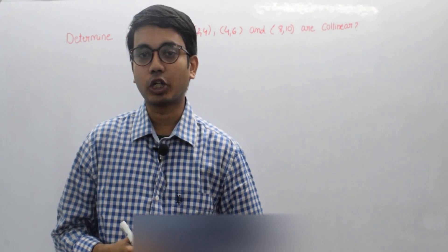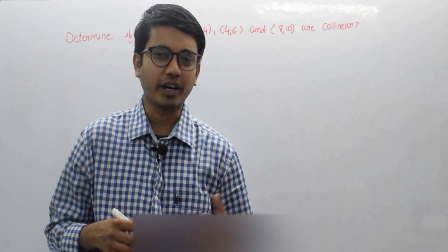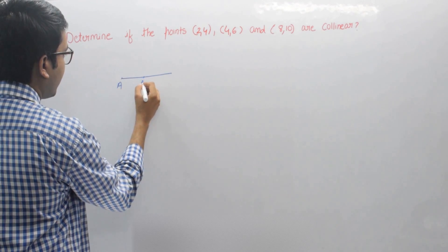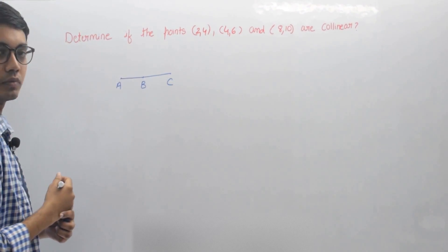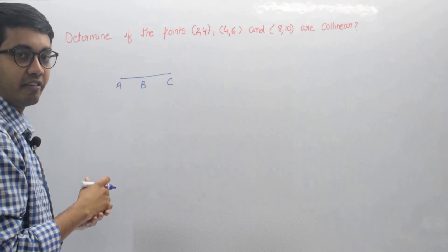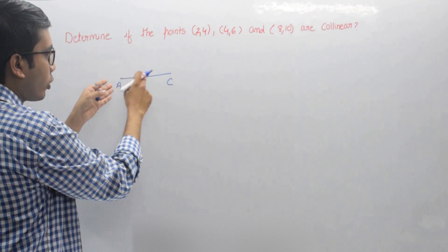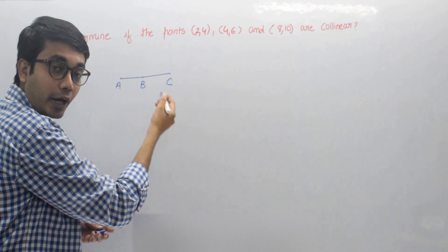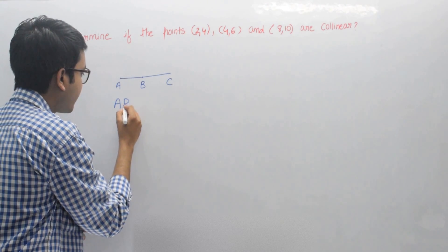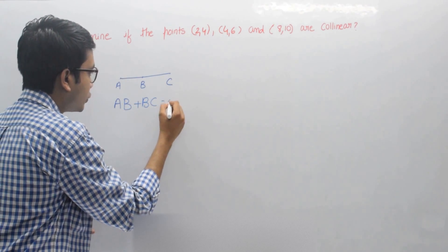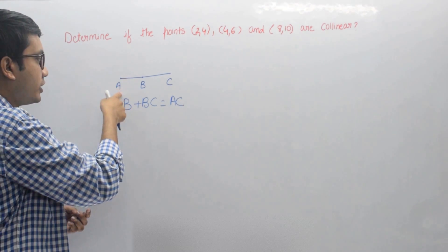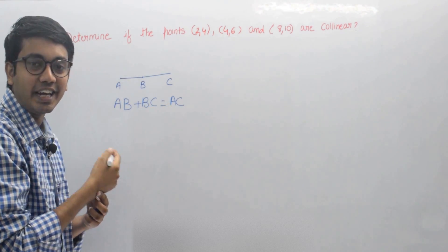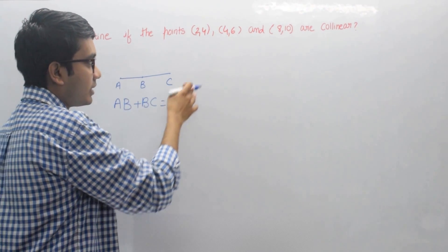A set of points are said to be collinear if and only if they lie on the same straight line. For example, let's take three points A, B, C. These three points are collinear if and only if they lie on the same straight line — you can see A, B, C lie on the same straight line. The important condition for collinearity is: AB plus BC should be equal to AC, that is the distance between A and B plus the distance between B and C should equal the distance between A and C. We'll apply this concept here.